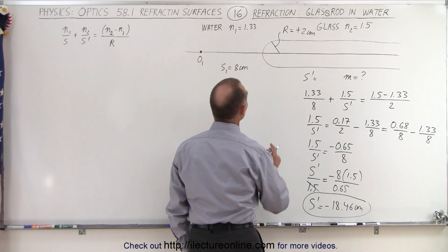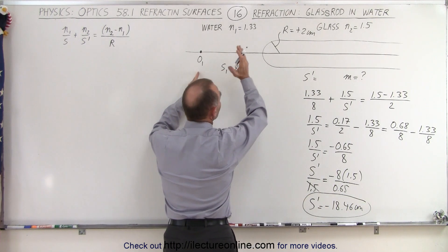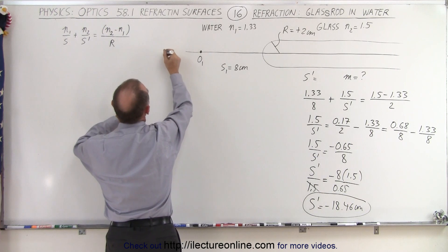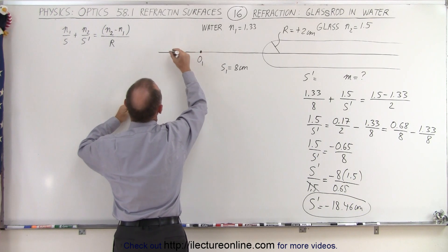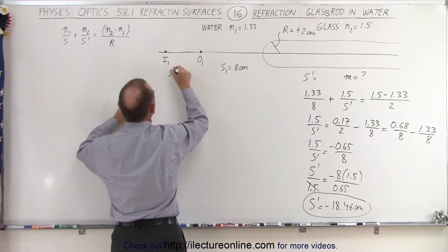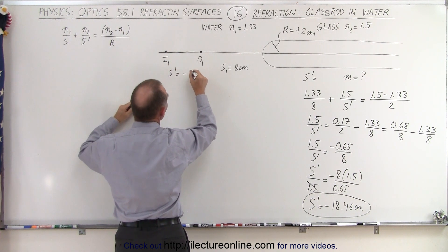So there's an interesting observation. We have the object over here, here's the boundary, we have the glass rod, but instead the image is going to be on the same side as the object, farther away from the boundary, with s prime equal to minus 18.46 centimeters.